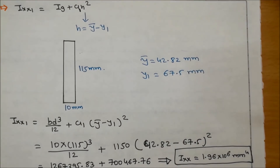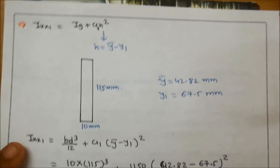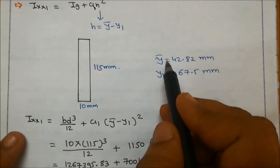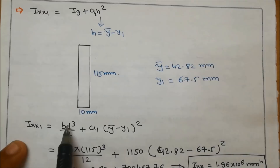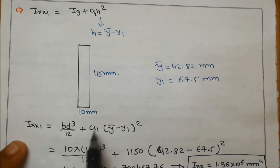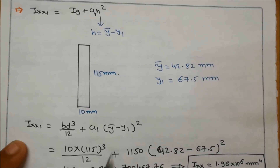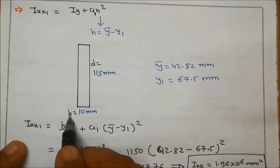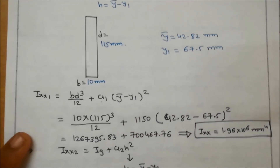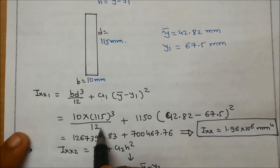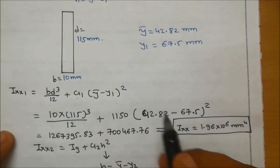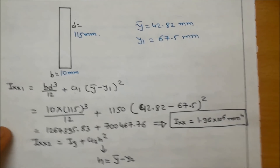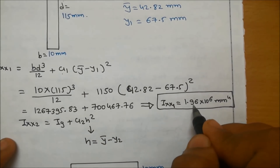For Ixx1, using Ig plus Ah square with H equals Y-bar minus Y1: the first part dimensions are 10 mm and 115 mm, Y-bar is 42.82 mm, and Y1 is 67.5 mm. So Ixx1 equals (10 × 115³)/12 plus 1150 × (42.82 − 67.5)². Solving this gives Ixx1 equal to 1.96 × 10⁶ mm⁴.